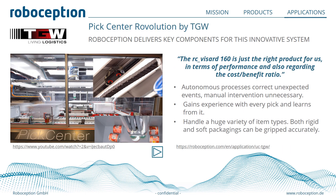Another example of a customer solution is the Pick Center Revolution by TGW. Here we use the RC Wizard 160 and combine it with intelligent software for picking unknown items from up to four bins and commissioning them into an output bin. The whole system contains a portal robot and is able to perform 1,000 picks per hour.